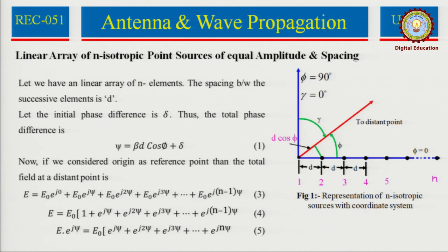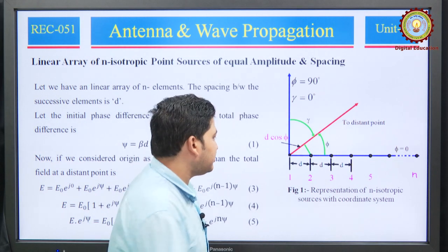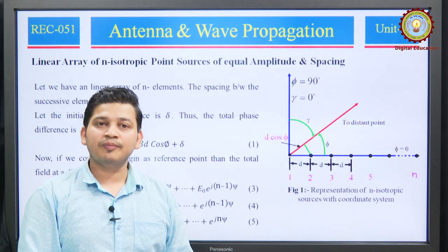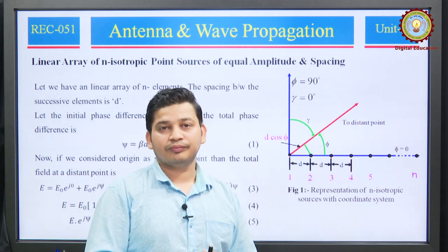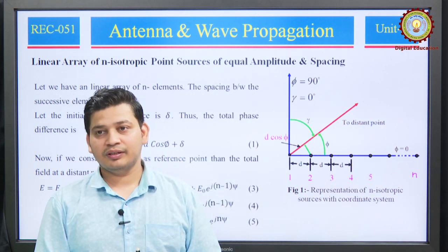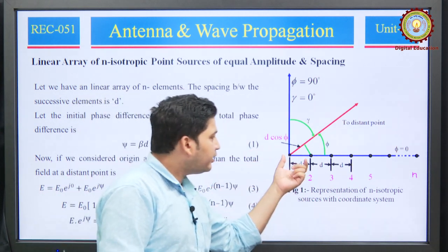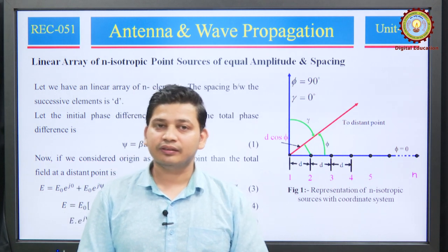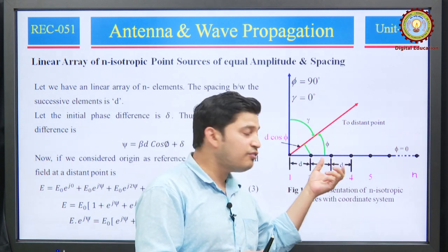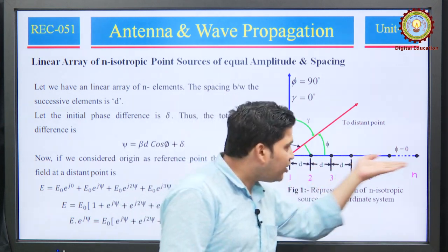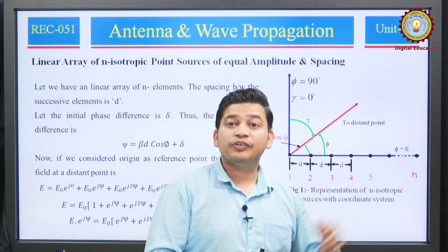The term linearity here represents that the arrangement of elements is equidistant. From the figure, you can see that both elements are equally spaced from each other. Second, and again most importantly, the amplitude and the progressive phase shift are also uniform — that is what linearity means here. Once again, the linear term represents that each source is equidistant from each other, and the variation of amplitude and progressive phase is also along the line of axis, which is uniform.